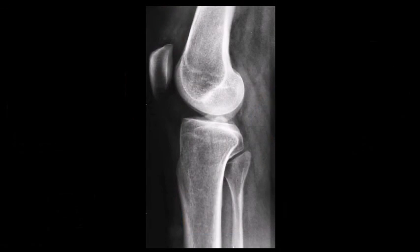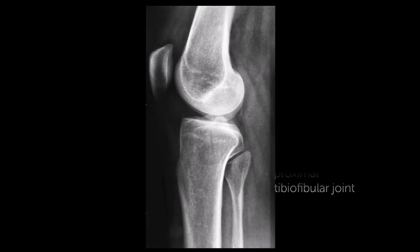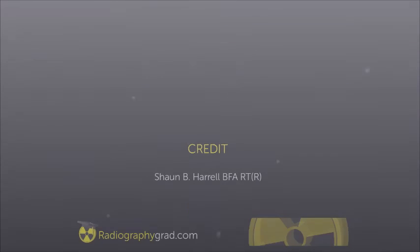Lateral views of the knee show the condyles of the femur in profile, as well as our angled tibial plateau, and great views of the proximal tibio-fibular joint. Thanks for watching!